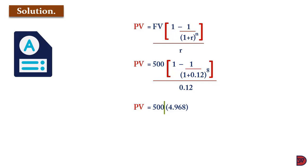So the annuity factor is what we worked in the brackets. When you multiply by the future value, it will give you $2,484. So if you receive $500 annually for 8 times, it is equivalent to $2,484 now.